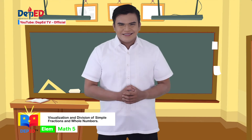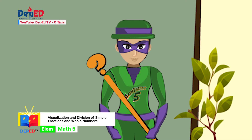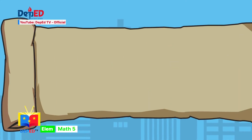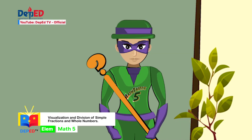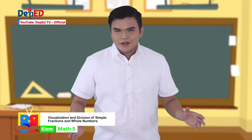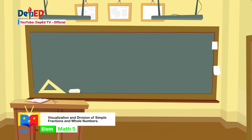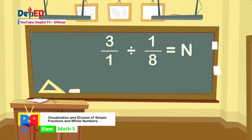Superdriller, show us the next trial. Hello, math heroes. This time, he wants you to divide a fraction by a whole number. Find the quotient of 3 divided by 1-eighth. To answer 3 divided by 1 eighth equals n, we will first rename the whole number 3 by putting a denominator of 1. Therefore, our new mathematical equation is 3 over 1 divided by 1 eighth equals n. This time, we will inverse the divisor which is 1 eighth.